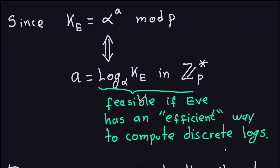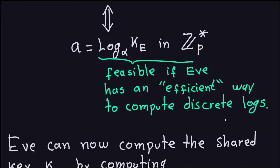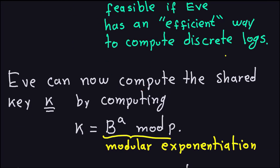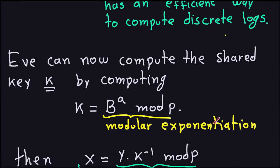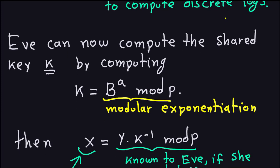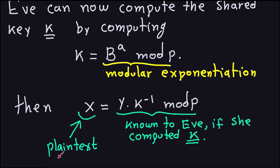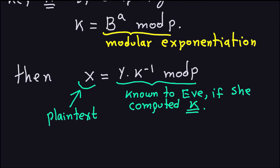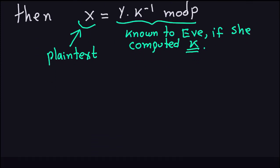So far we don't have any efficient ways to compute discrete logs, but assuming Eve can compute A efficiently, she can then compute the shared key K by computing B to the power of A modulo P — just a modular exponentiation. B is public, A was already recovered via discrete log. Finally, she can recover the plaintext by computing the modular inverse of K modulo P using the extended Euclidean algorithm, then multiplying. Computing Alice's exponent breaks the ElGamal scheme.